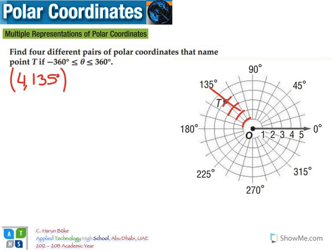Now, that's my coordinates. That's my first pair. Now, the second pair, third pair, and fourth pair I'm going to get, I'll try to change the angle so that it will be in between minus 360 and 360. And also, I can change the distance in terms of direction.